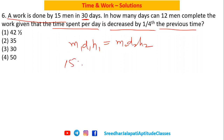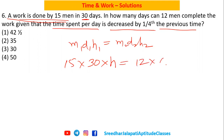Initially, 15 men complete the work in 30 days, but we do not know how many hours per day they work in the first case. So let us assume that they work for h hours a day. Now this work has to be done by 12 men, and we need to find how many days — that is d2.